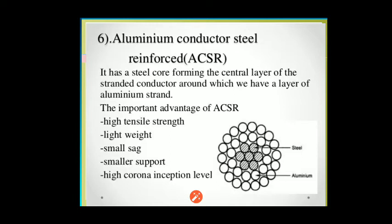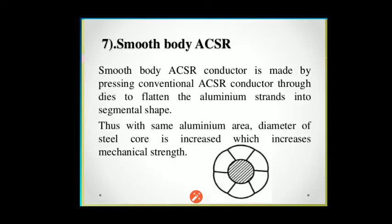Sixth, the ACSR conductor — aluminium conductor steel reinforced — is one of the most important types. It has a steel core forming the central layers, around which there are layers of aluminium strands, as shown in the diagram. Its advantages include high mechanical strength, light weight, small sag, requirement of smaller line supports, and high corona inception levels.